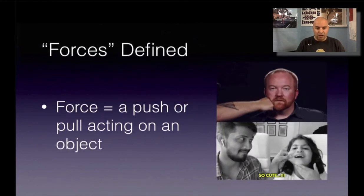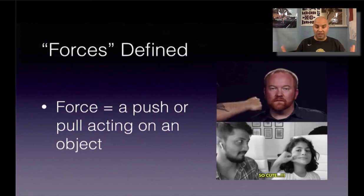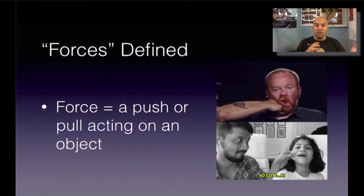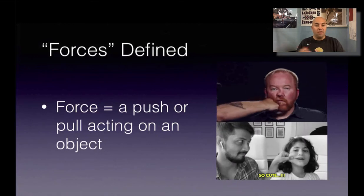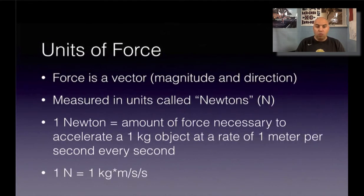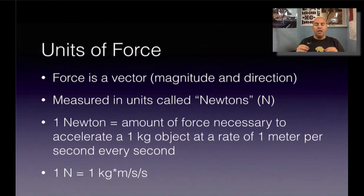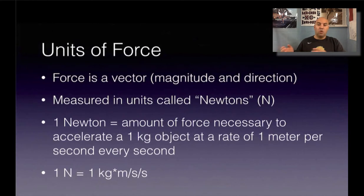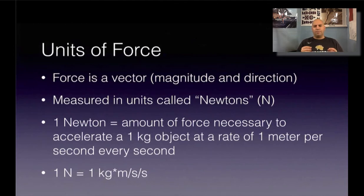The very first thing is the idea of what a force is. In physics, force is just a push or a pull that's acting on an object. When we're talking about the units of force, we've got to remember force is a vector — it has both magnitude, which is how much, and it also has direction. So when we're talking about these vector forces, we're going to measure those in units that are called newtons. The symbol we use for newtons is a capital N.